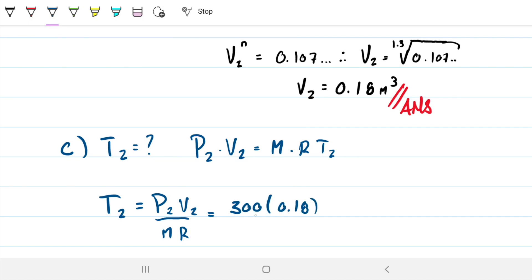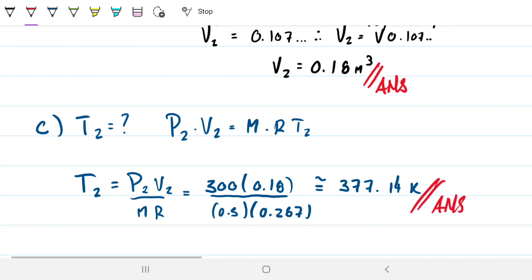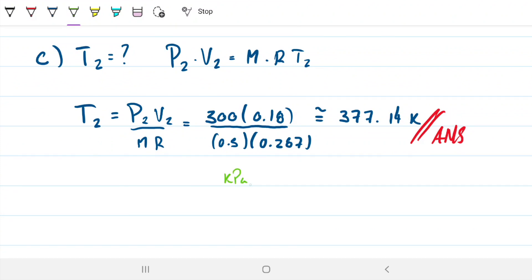300 kPa times 0.18 m³, that gives us kilojoules unit-wise. Then we're dividing that by 0.5 kg and 0.287 kJ/(kg·K). So we're going to have the answer in Kelvin. This turns out to be about 377.14 K approximately. We always make sure to check units: kPa times m³ gives kJ, kilograms cancel, and we have Kelvin on top, so all good.